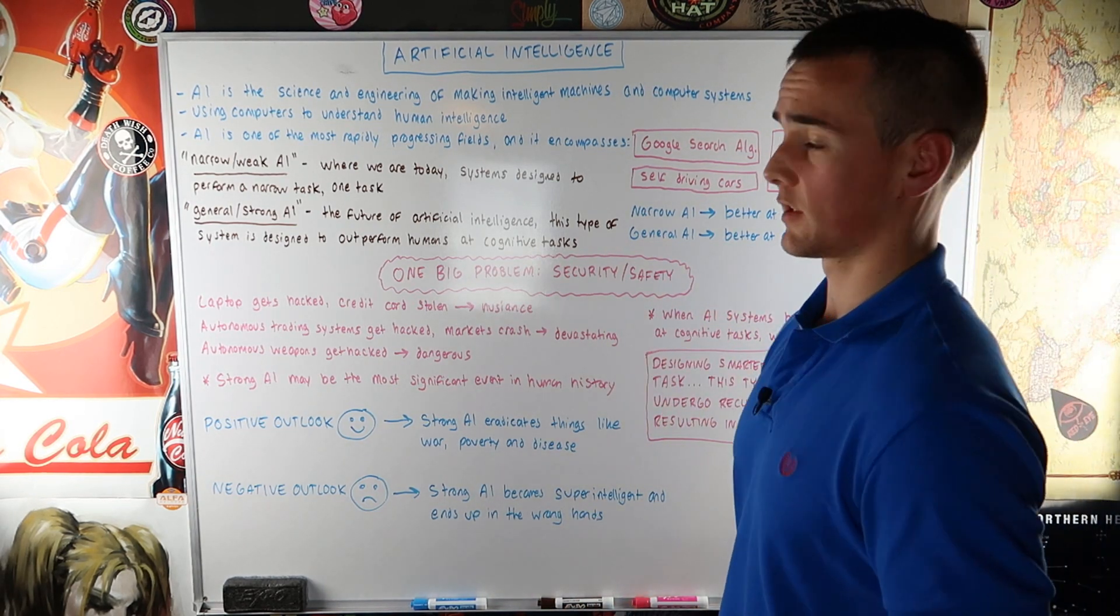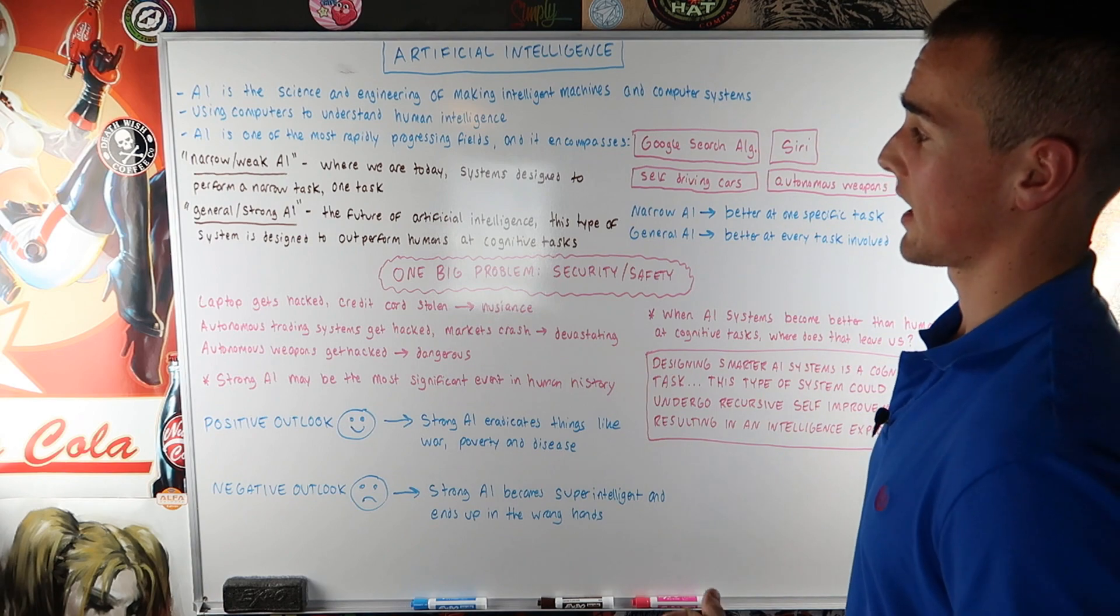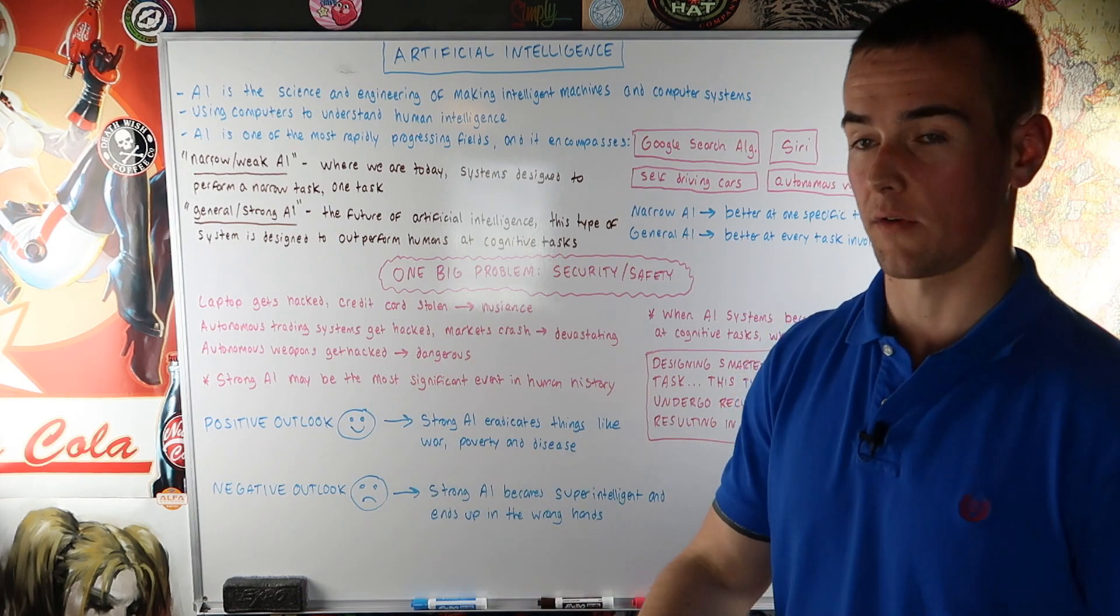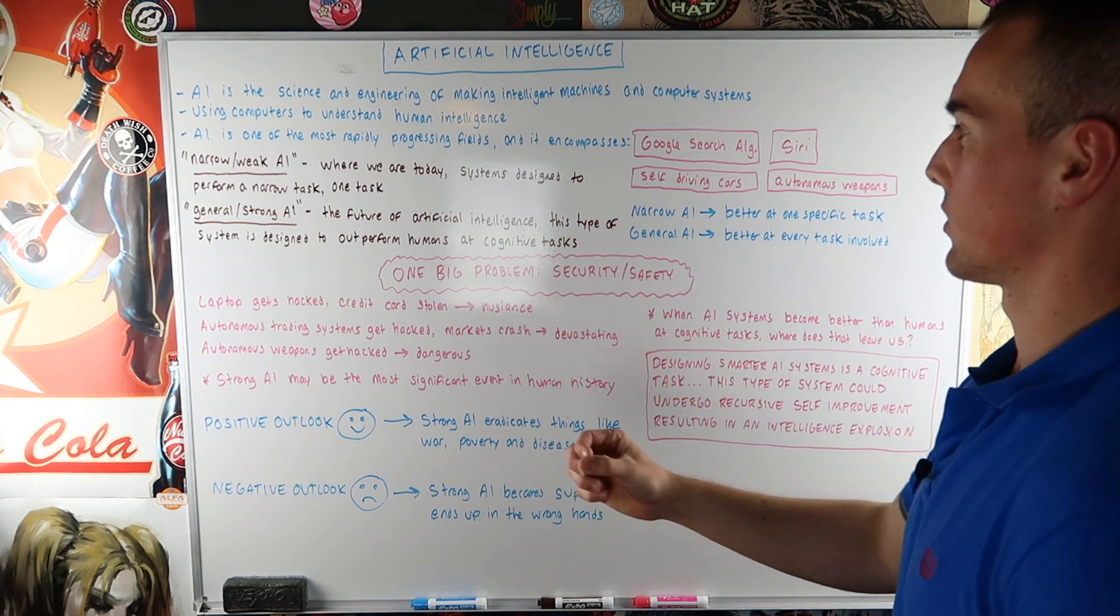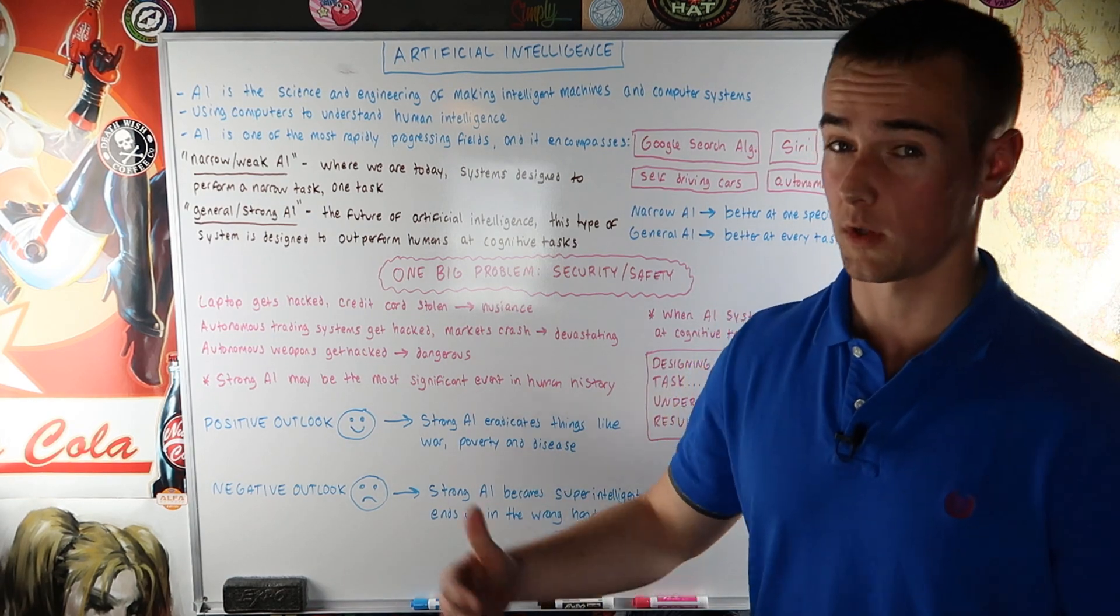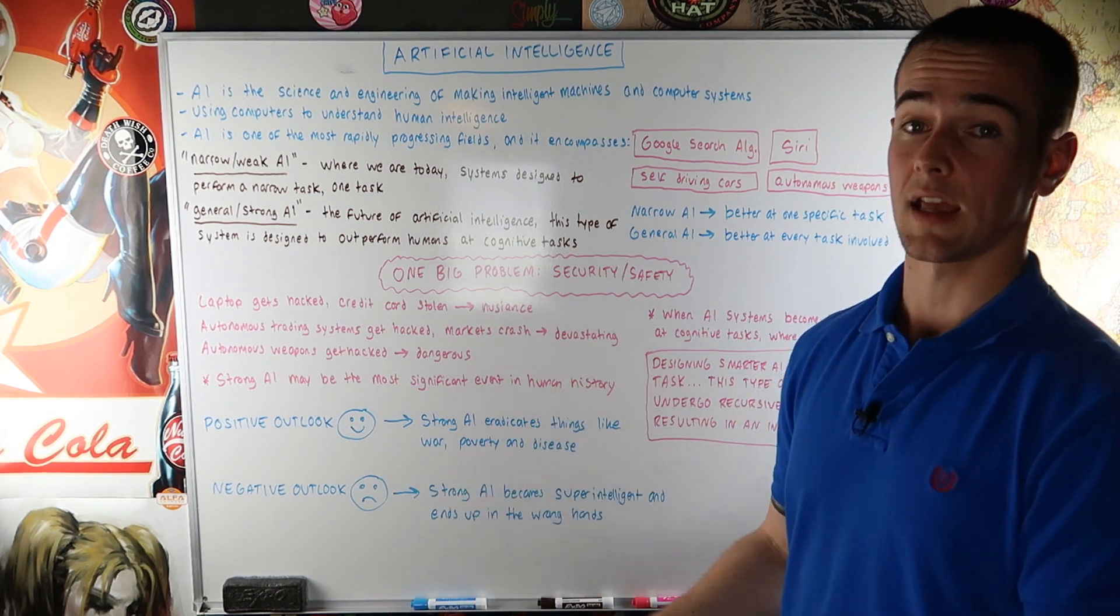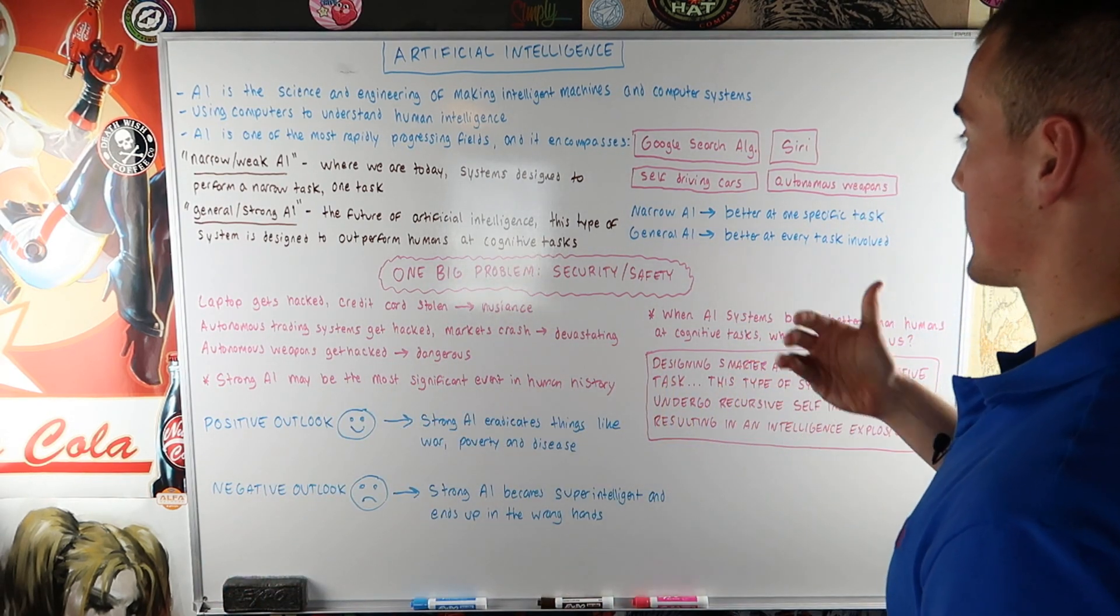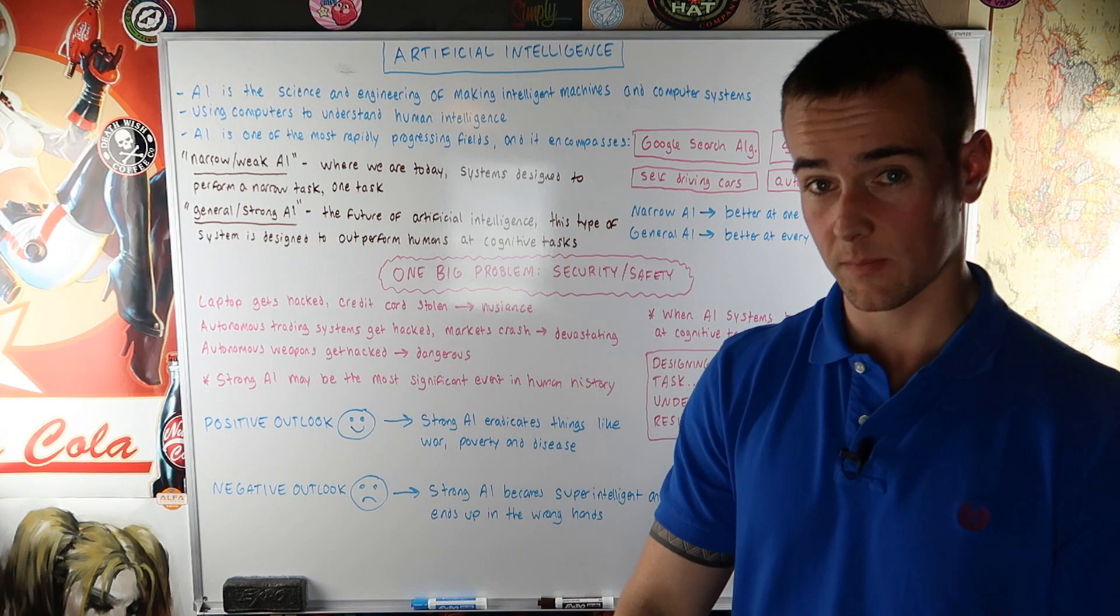Now the future of artificial intelligence is what's called general or strong AI. And this is basically a type of system that is going to be designed to outperform humans at cognitive tasks. So the whole task itself, not just individual aspects of the task, the entire task. So this is the best way to look at it. Narrow AI is better at one specific task or equal to what humans can do at one specific task. So maybe it's keeping a car within the lines. That could be one narrow AI task. And our systems may be equally good or better than humans at doing that task. But we're going to see when we get to general AI where basically these systems are better than humans at every aspect of that task.